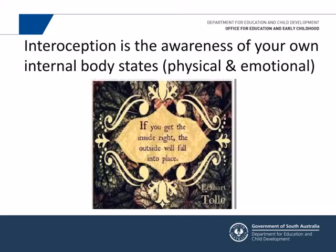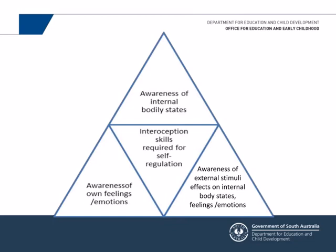Self-regulation is really a misnomer in primary and secondary schools — it's regulation of the child with adult support. If they have no interoception, they really cannot self-regulate. Interoception is the awareness of internal body states — physical and feelings — and those are required to be able to self-regulate. You also need an awareness of how external stimuli affect your internal body states. For example, kids that get hangry need to know that when they're hungry, they get angry. If they don't know that, they can't do anything about it. Interoception forms two of the three parts required for self-regulation.